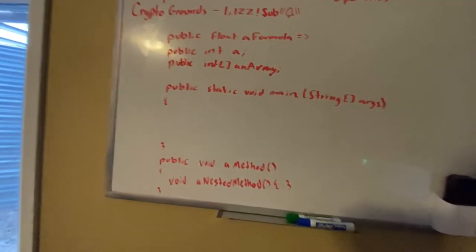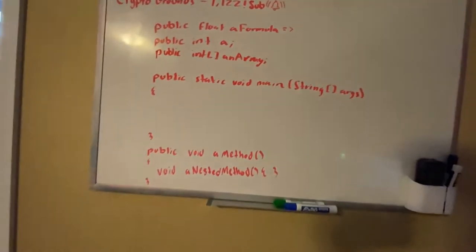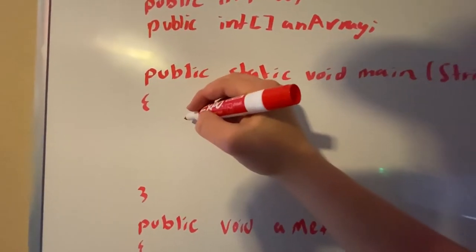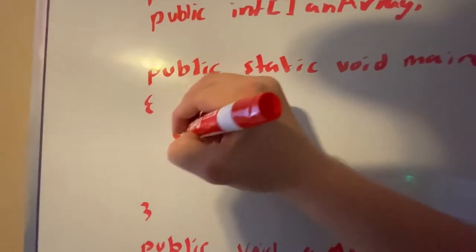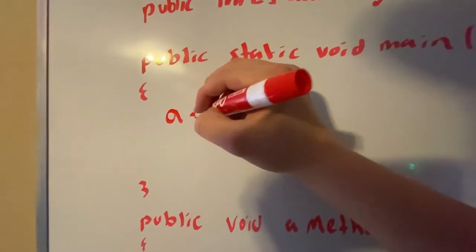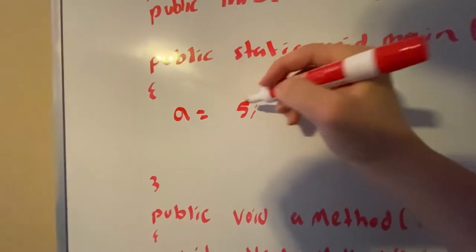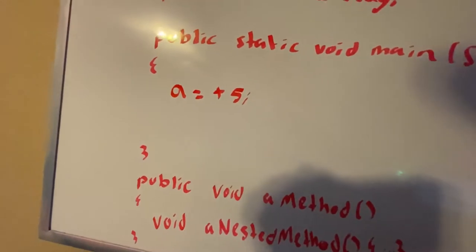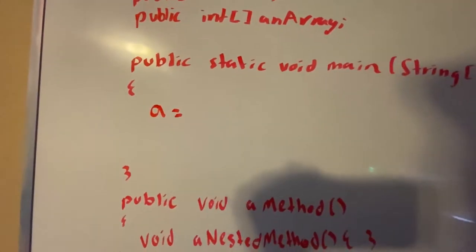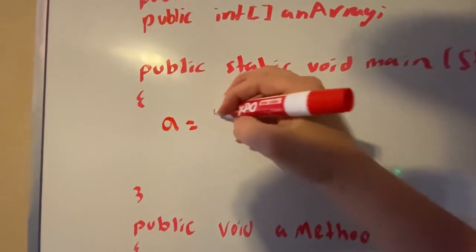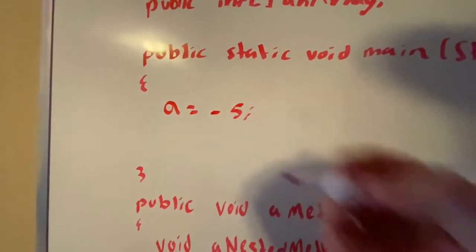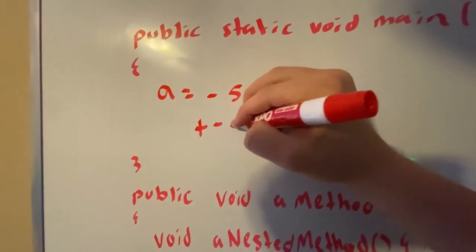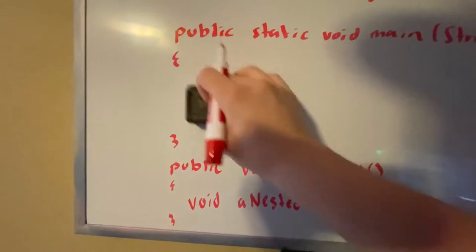Something I forgot to mention: we have unary positive and negative operators. If we set a equals five, we can add the plus sign to make it positive. If it's a negative five, using the negative sign will make it negative five. Using plus before negative five will just make it five.